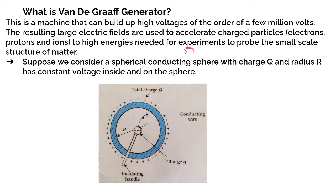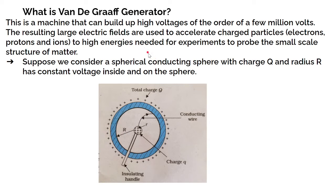The charged particles experience a force due to this electric field. Because of this force, the charged particles accelerate and start to move very quickly. If we move these charged particles — electrons, protons, and ions — at high speed, we can initiate atomic and nuclear reactions.